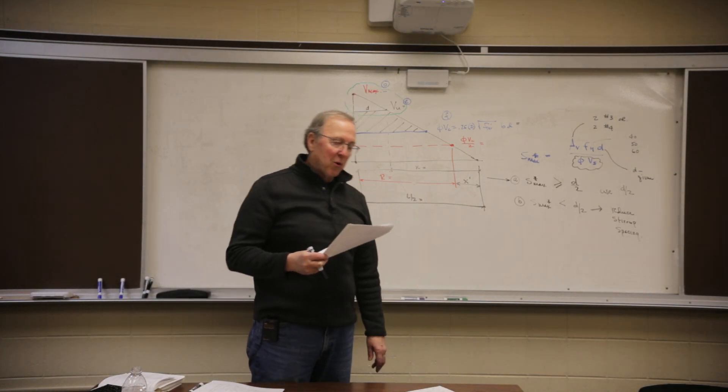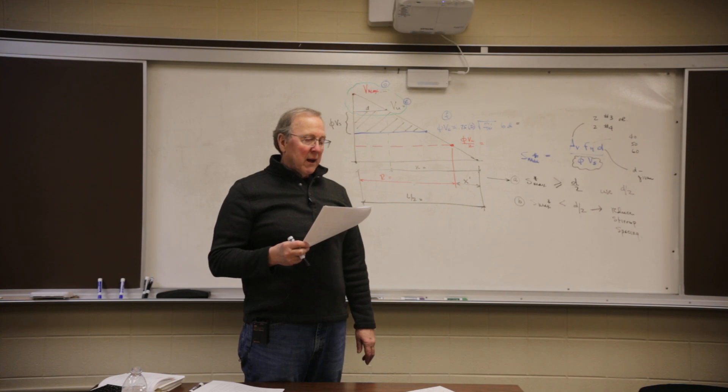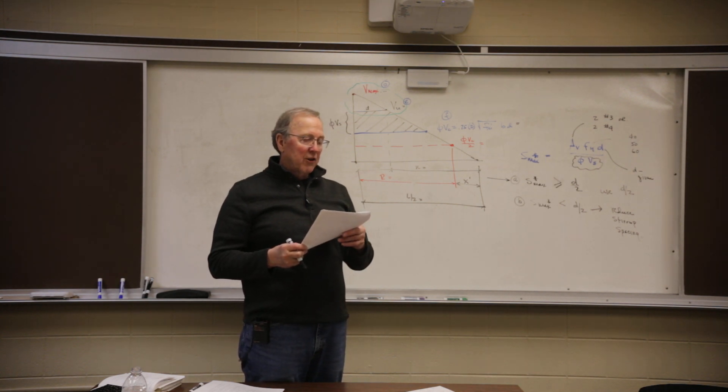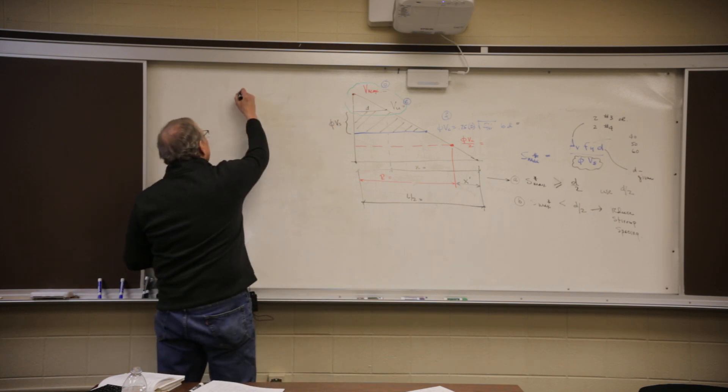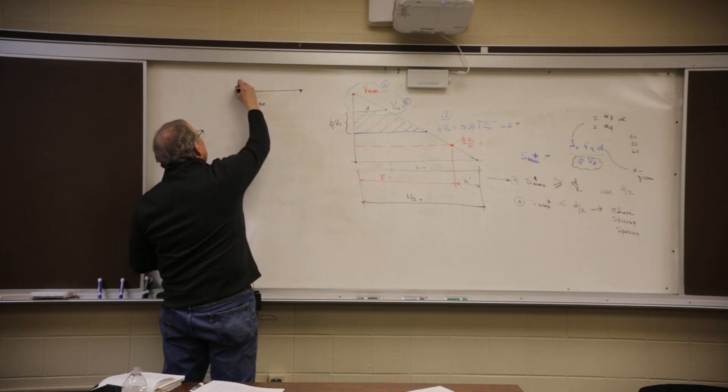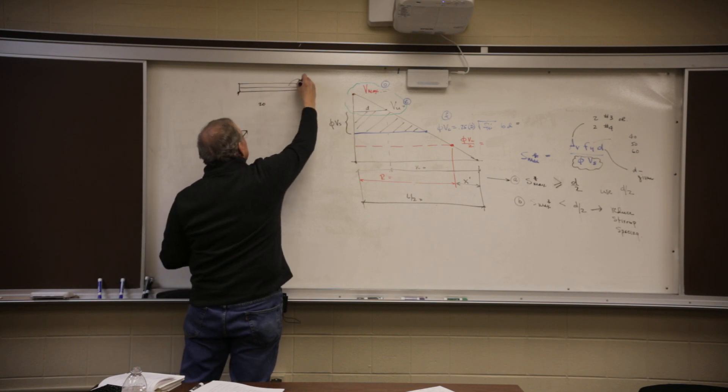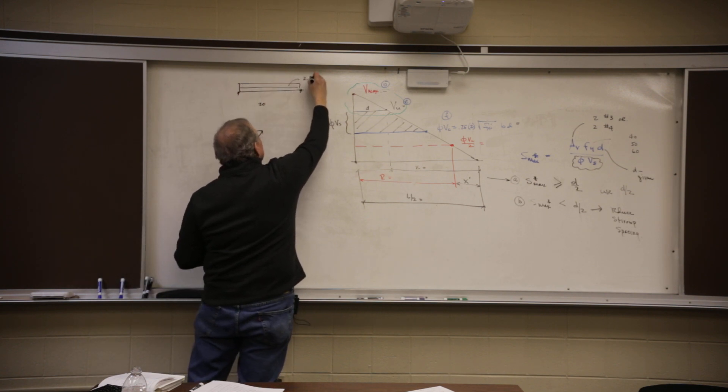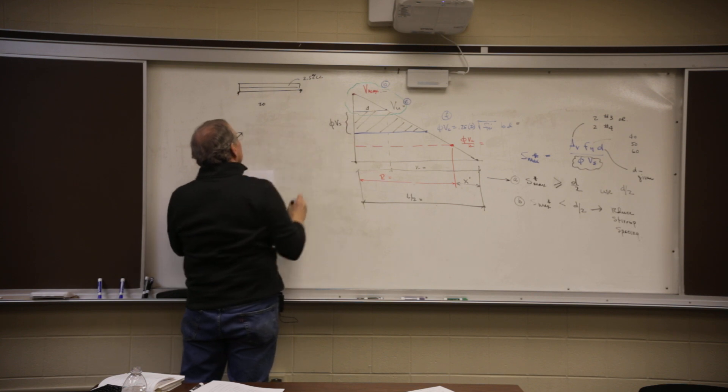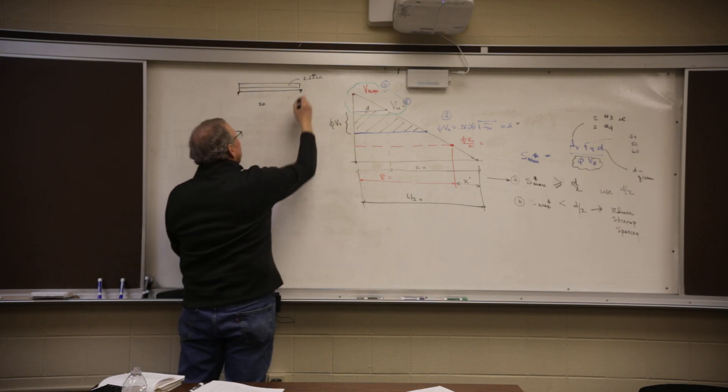I got a simply supported concrete beam. Its distributed loads are two and a half live, one and a half dead over a 20 foot span. So if I look at it, I got a 20 foot span. I got two loads on it. 2.5 live load and I've got 1.5 dead load.